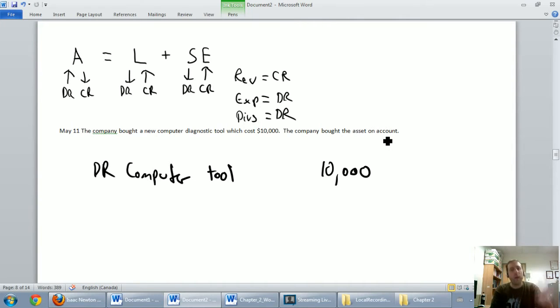In this case we bought the asset on account. That accounts payable is coming up again here. We have a liability, we owe these guys money. We owe them $10,000, it's a liability going up. I didn't owe them anything on May 10th, I owe 10 grand on May 11th. That liability is increasing, so I'm going to credit my favorite credit, accounts payable. I credit that for $10,000. And again, my description would be purchase the computer diagnostic tool on account. Okay, let's move on.